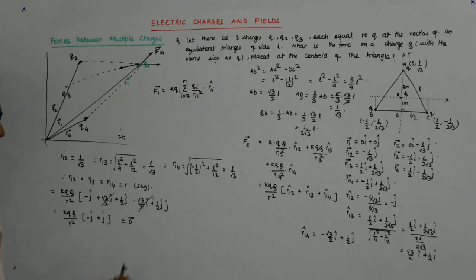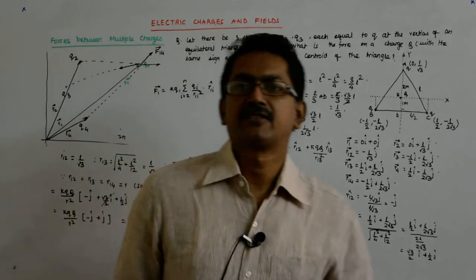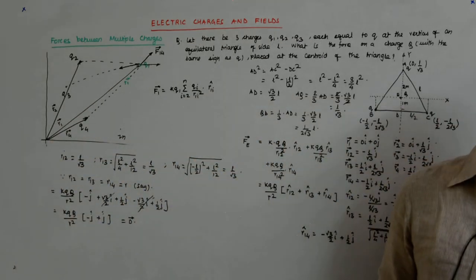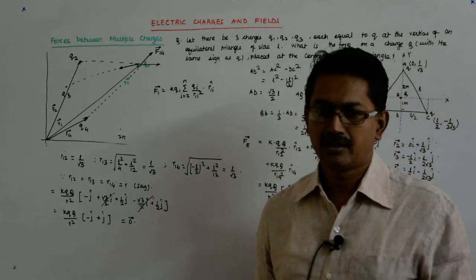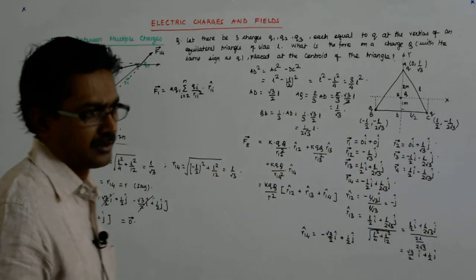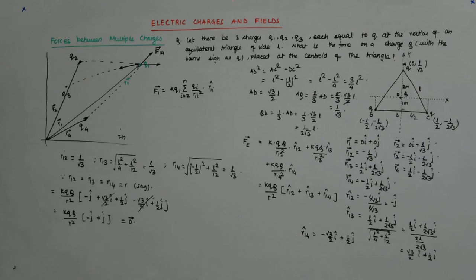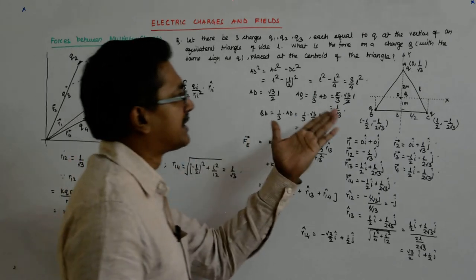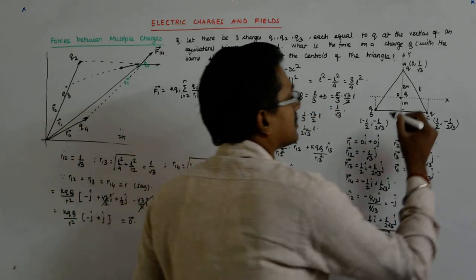And so this is minus j cap plus j cap 0. This is 0 vector. Vectors add up to give you a vector. They do not give you a scalar, okay. This is O vector actually. We denote it by O. So, the net force on this becomes 0.